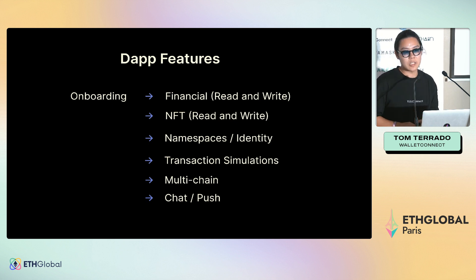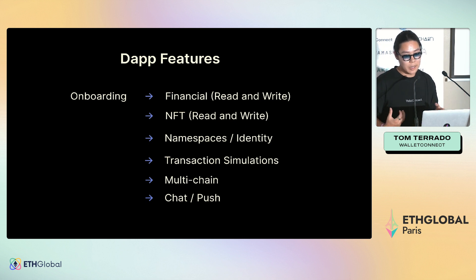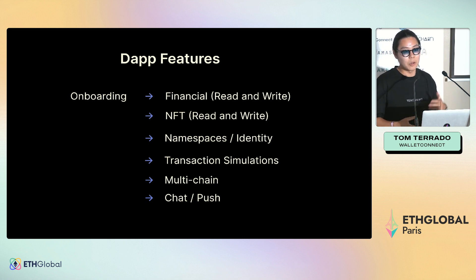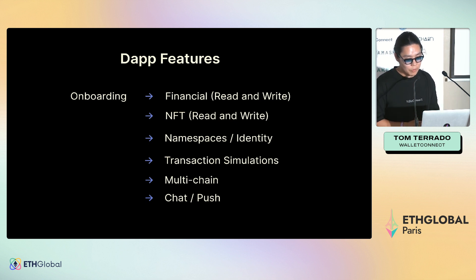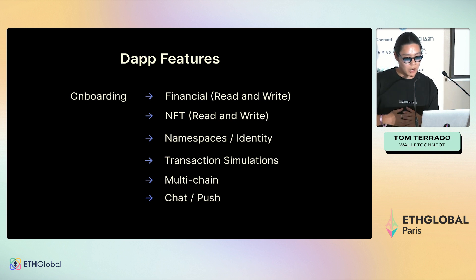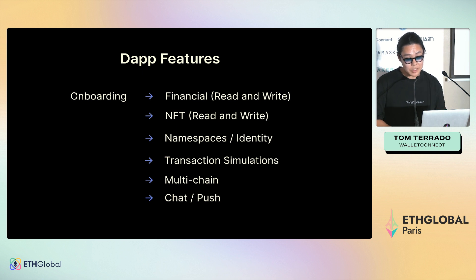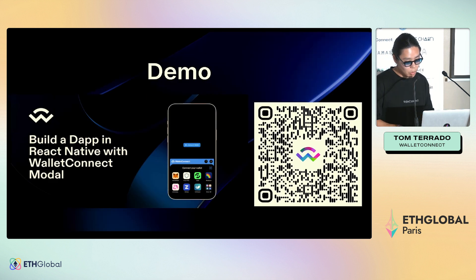Transaction simulation is something that can be copy-pasted, and multi-chain is something we've really missed. I haven't seen many good multi-chain applications on either the wallet or dApp side — we're still figuring it out. With L2 summer and however many layers we're going to have, we really need to focus on this. That's why we're encouraging these dApp features.